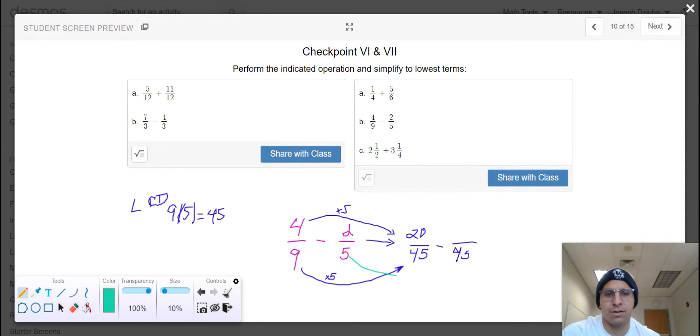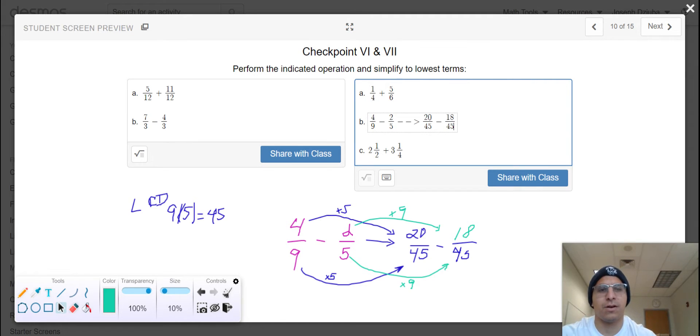we will see that 5 times 9 is 45. That's a terrible 9. There we go. And 2 times 9 is 18. Now that the denominators are the same, we can simply subtract the numerators and leave the denominator the same.